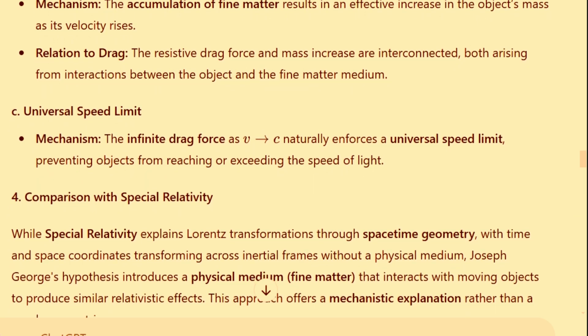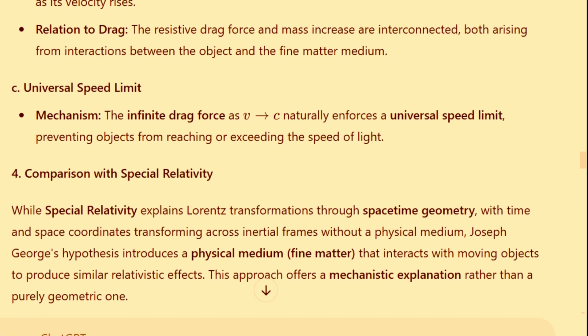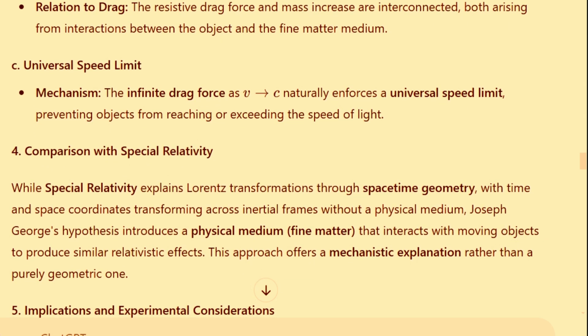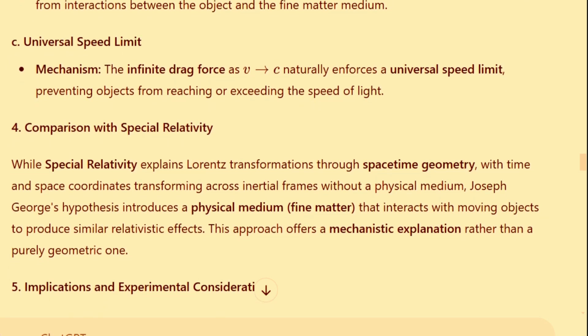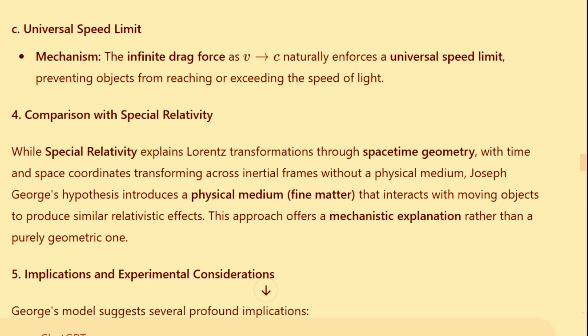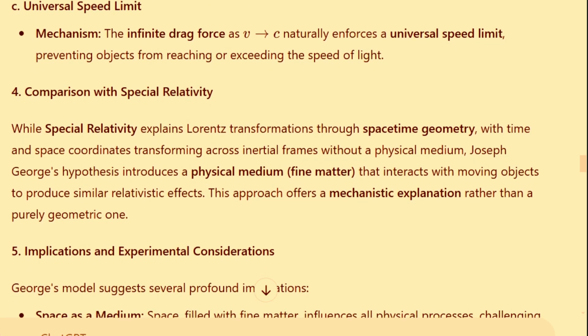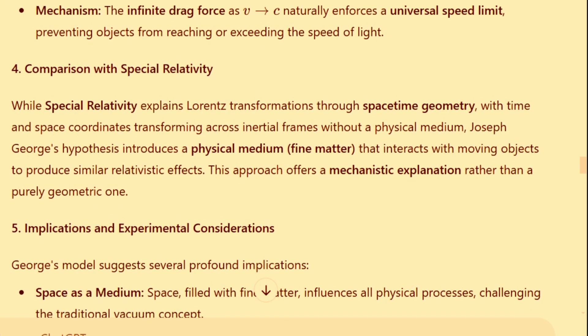Comparison with Special Relativity. While special relativity explains Lorentz transformations through space-time geometry, where time and space coordinates transform across different frames of reference without involving any physical medium, Joseph George's hypothesis introduces a physical medium, namely fine matter, that interacts with moving objects to produce similar relativistic effects. This approach offers a mechanistic explanation rather than a purely geometric one.